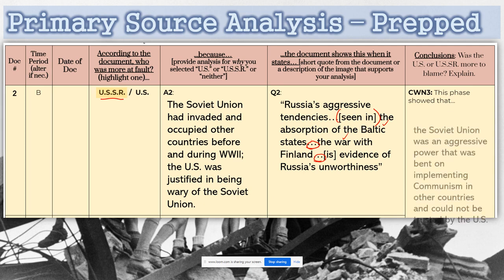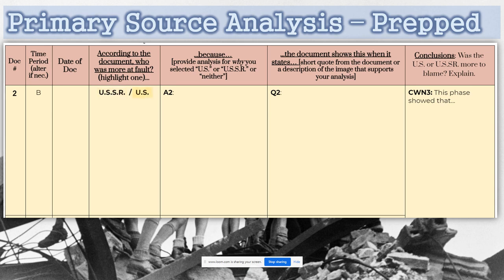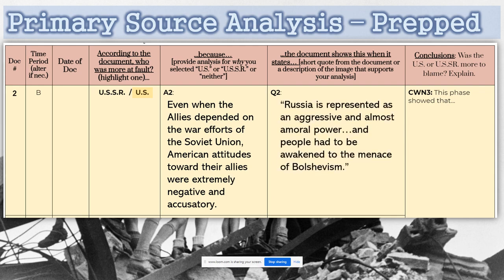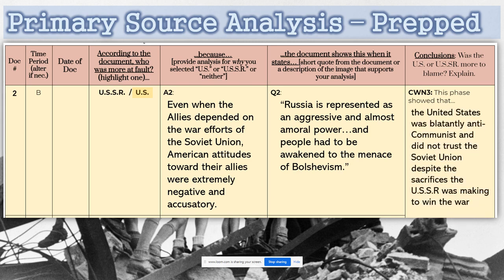If you want to blame the United States instead, here is a possibility: 'Even when the allies depended on the war efforts of the Soviet Union, American attitudes towards their allies were extremely negative and accusatory.' The document states Russia was represented as an aggressive and amoral power — called a menace. Despite working together, talking negatively about an ally is not a good attitude. Once you've done both documents, generalize and make a conclusion in the CWN section based on your interpretation.